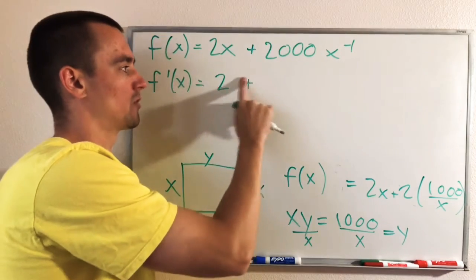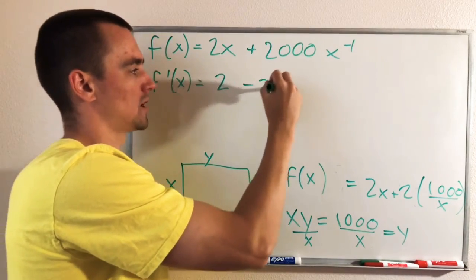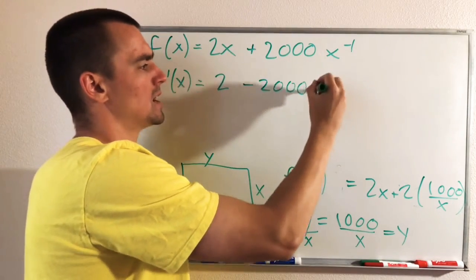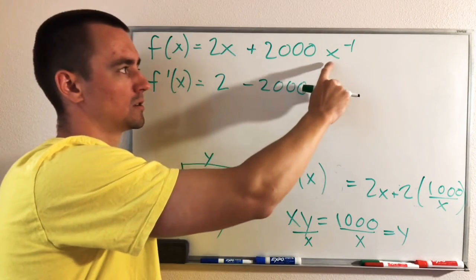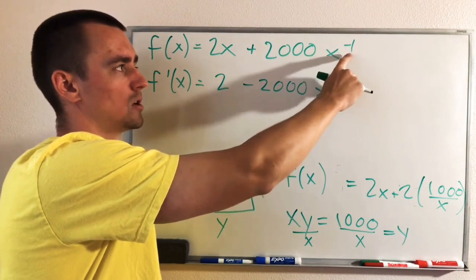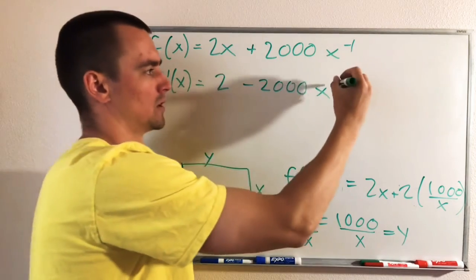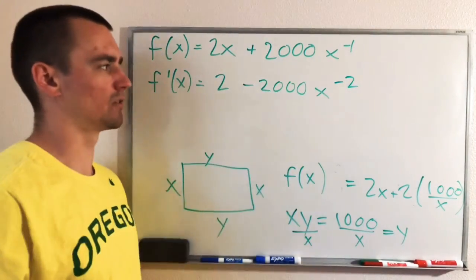So we can bring the negative 1 down in front. So this is actually going to be minus 2,000 times X. And then we want to lower our power by 1. So X to the negative 1, negative 1 minus 1 is negative 2. So this is our derivative.